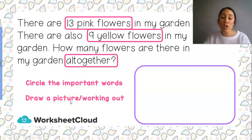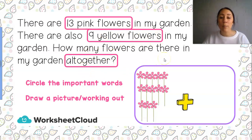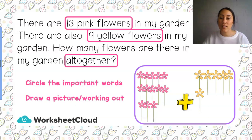Now we are going to draw a picture or do our working out. Sometimes in Grade 2 you might need to draw a picture to understand what they are asking. So we're going to draw our 13 pink flowers — counting to 13 — and then we need to do something with our 9 yellow flowers. Remember, all together is a plus sum, so we're going to plus our 9 yellow flowers and draw them as well — counting to 9.